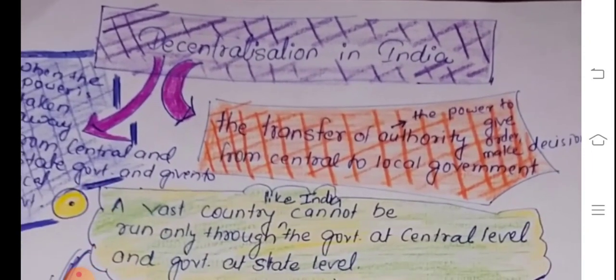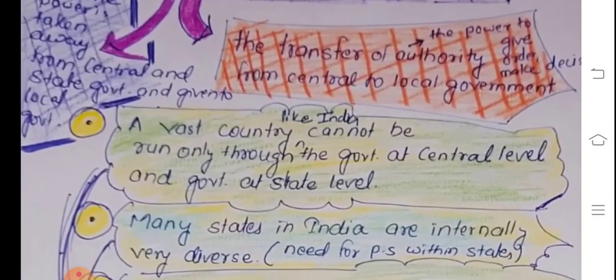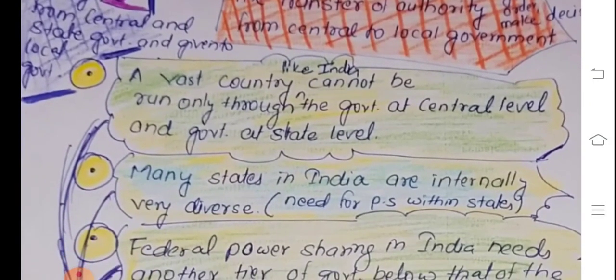You have to understand what is Decentralization in India. We noted that in a federal government there are two or more levels of government. So, there are not only two, but there can be a third tier of government. We are going to study about this third tier of government now.